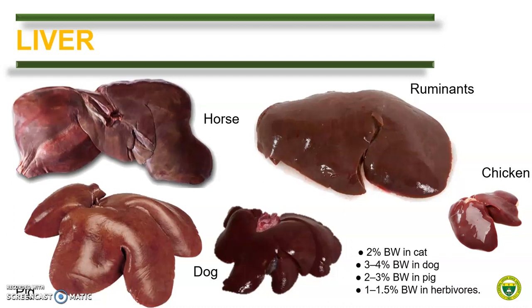In cats, it is around 2% body weight; 3-4% in dogs; 2-3% in pigs; and around 1-1.5% in herbivores like ruminants and horses. Note also that species vary in the number of lobes present and with the presence or absence of the gallbladder.